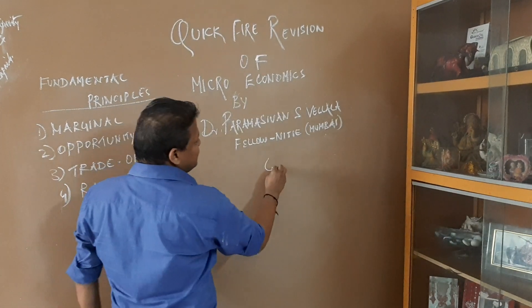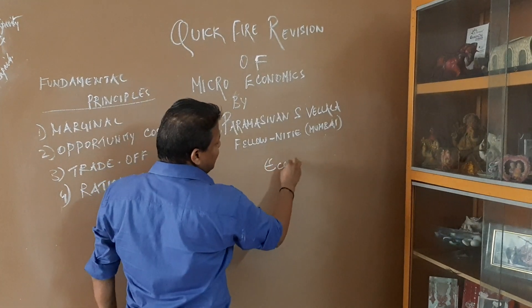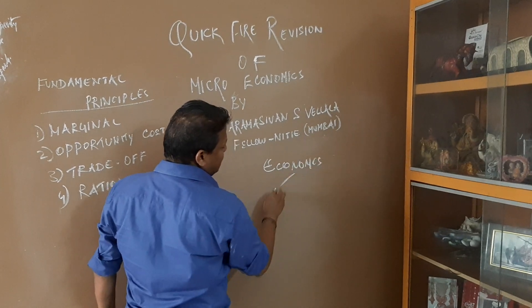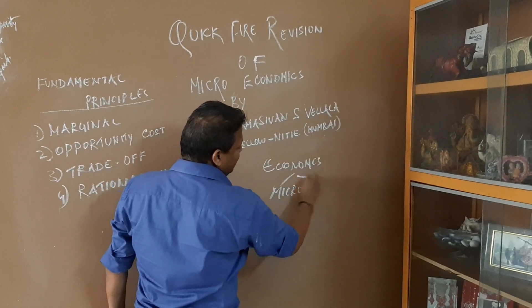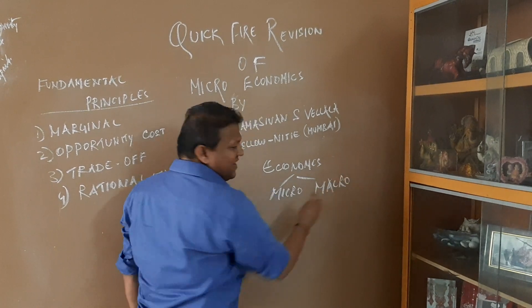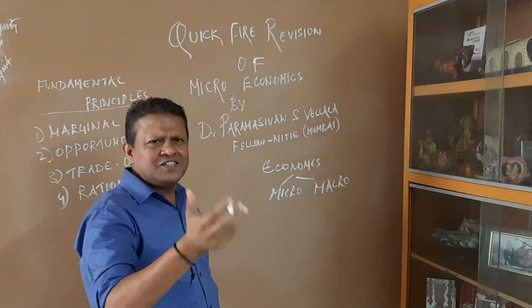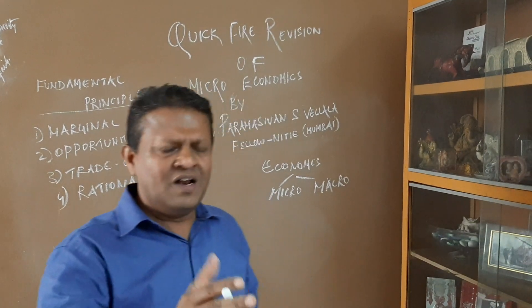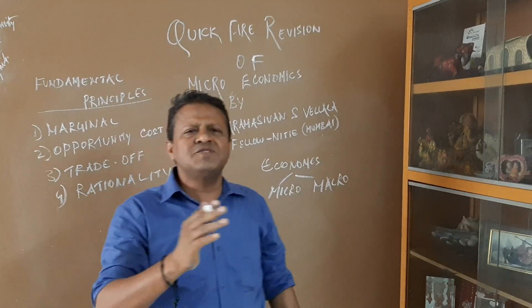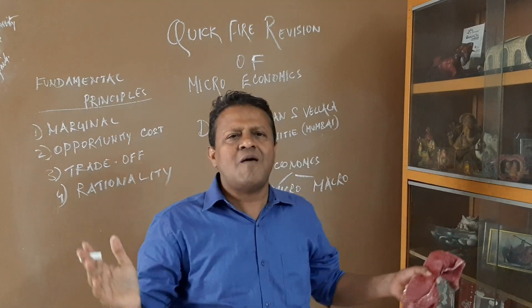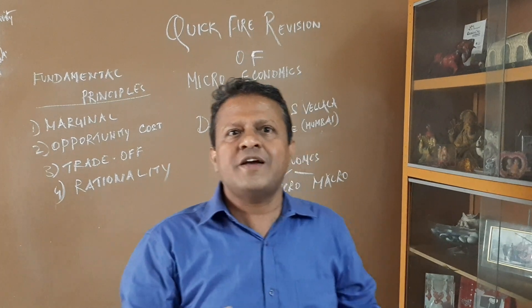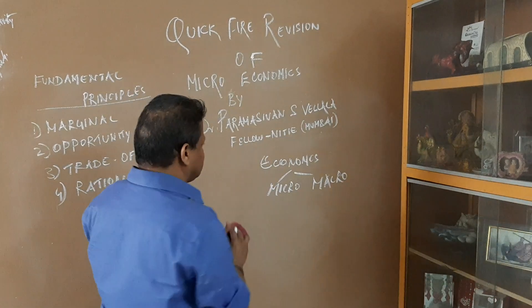Economics we basically divide into two categories: microeconomics and macroeconomics. Microeconomics deals with the individual person, individual decision-making, the firm, the individual, the consumer behavior. Macroeconomics deals with aggregate economics — aggregate demand, aggregate supply, aggregate consumption, aggregate investment, etc.